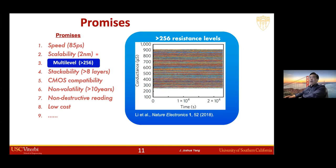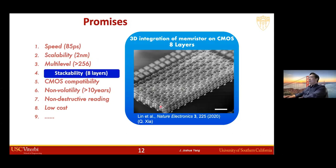In addition to being scalable in 2D, the device is also stackable in 3D. We can stack devices on top of each other because they only need amorphous or polycrystalline materials. In this example, we stack eight layers of memristors to build a 3D neural network, and we even use that neural network as a convolutional neural network to process video information. There are other good properties such as CMOS compatibility, non-volatility, and non-destructive reading.